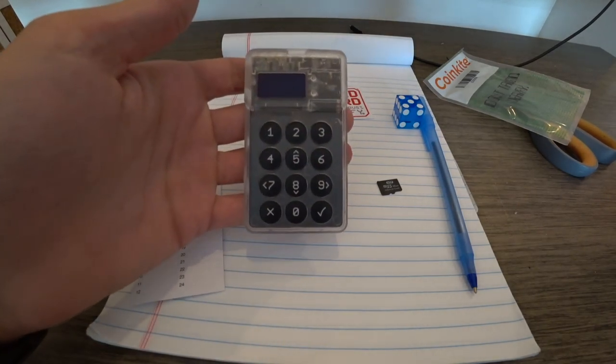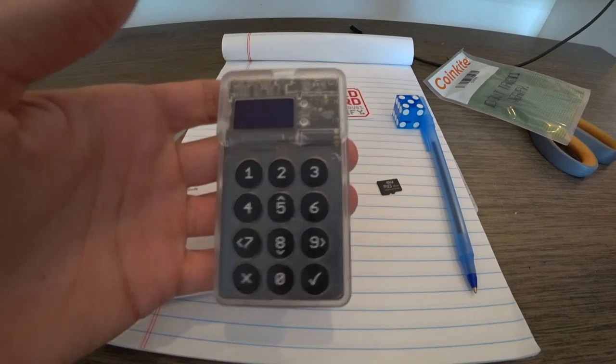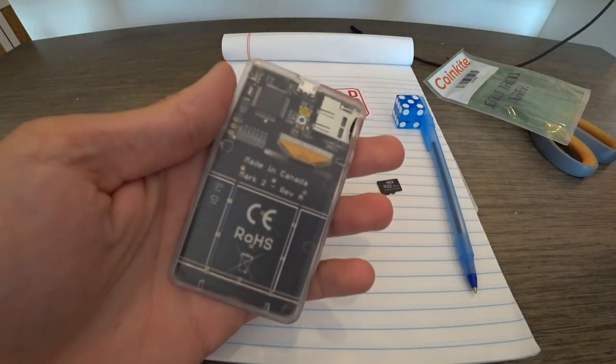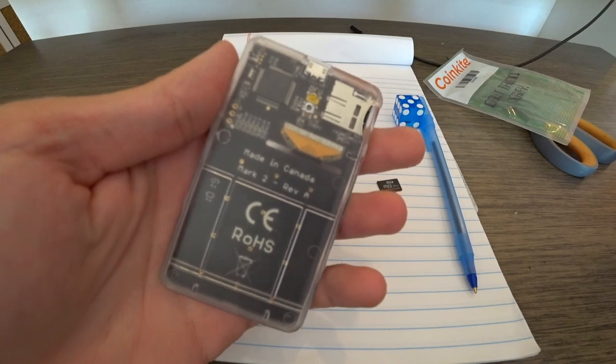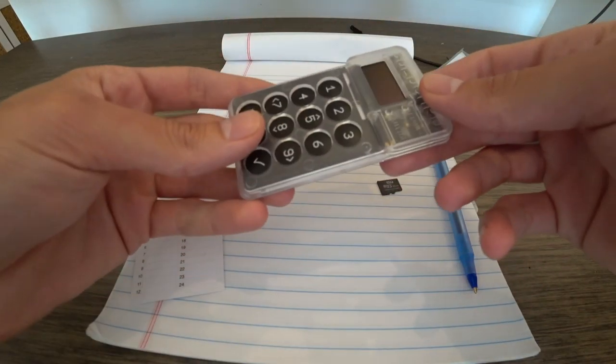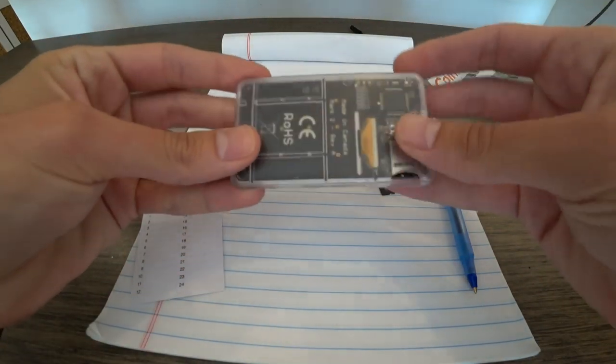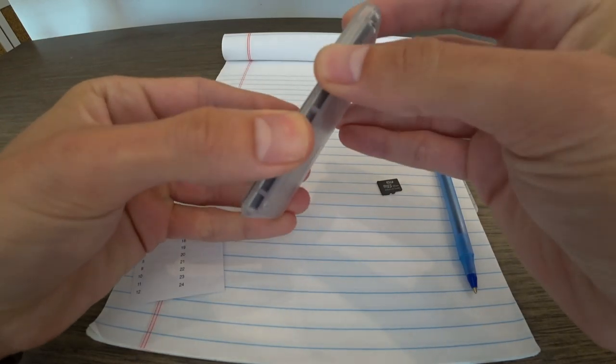This is the cold card. As you can see it's nice and transparent. Gotta love that transparent build that Rodolfo did. Made in Canada. So once again inspect the device. See if it looks like it's been tampered with at all.